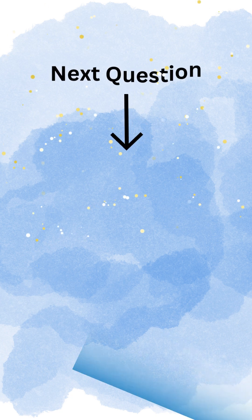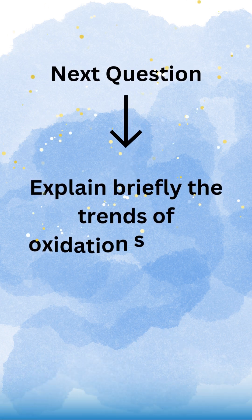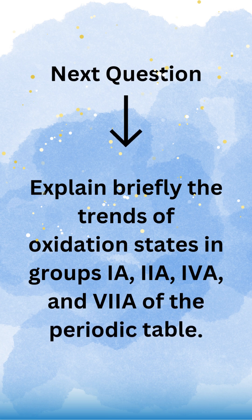Next question: explain briefly the trends of oxidation states in groups 1A, 2A, 6A, and 7A of the periodic table.